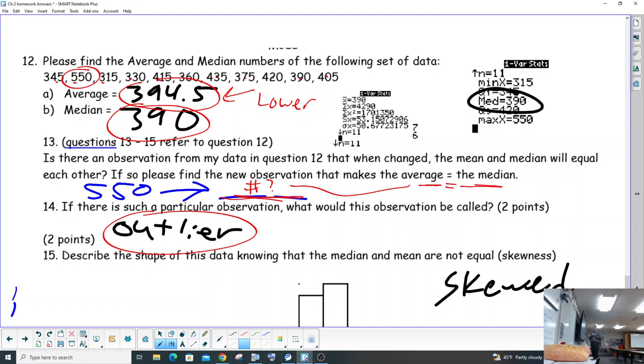And then describe the shape of this data, knowing the median and median aren't equal. So what does it mean again? When the average is greater, when the median is less, basically. So when the average is greater than the median, is that a skew to the left or a skew to the right?